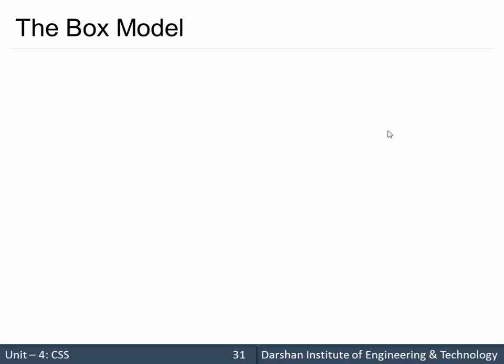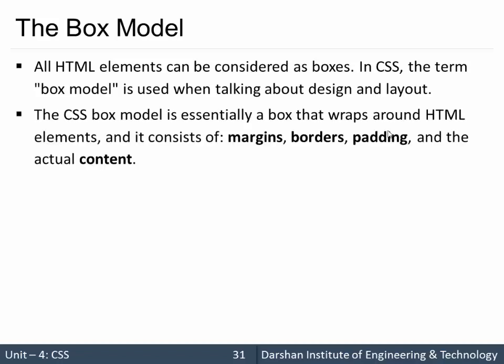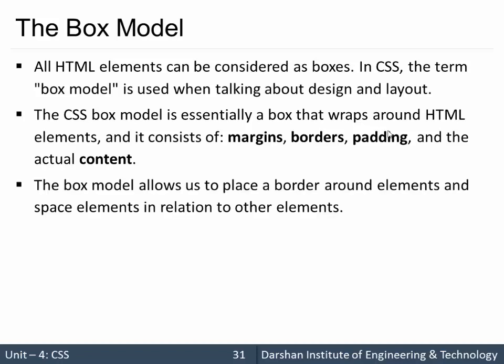Hello everyone. In today's session we are going to discuss the box model in CSS, which is a very important question for interviews as well as programming. All HTML elements can be considered as boxes. In CSS, the term box model is used when talking about design and layout. The box model contains four properties: margin, border, padding, and the content itself. The box model allows us to place a border around elements and space elements in relation to other elements.